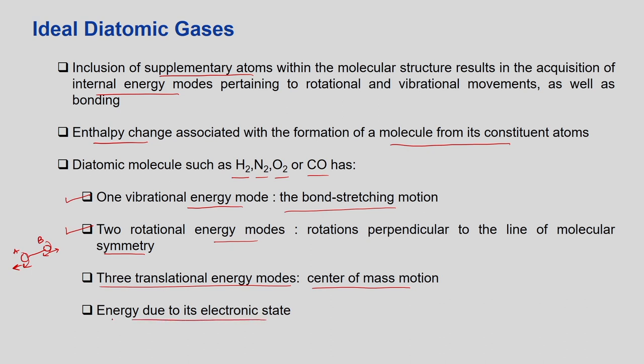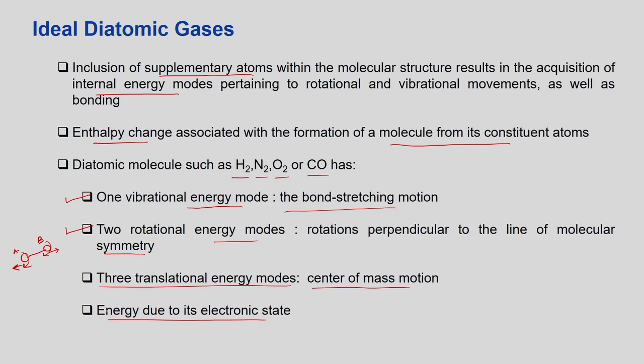We are adding a vibrational energy mode and a rotational energy mode. As usual, there will be three translational energy modes corresponding to center-of-mass motion along x, y, and z directions. There will also be energy states due to the electronic state — electrons may occupy different energy levels along with their degeneracy, analogous to monoatomic gases. In this lecture we focus on the rotational energy mode.